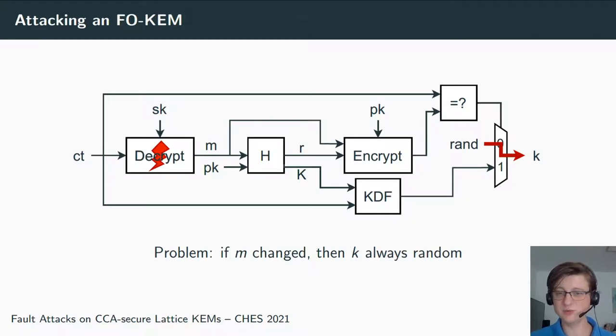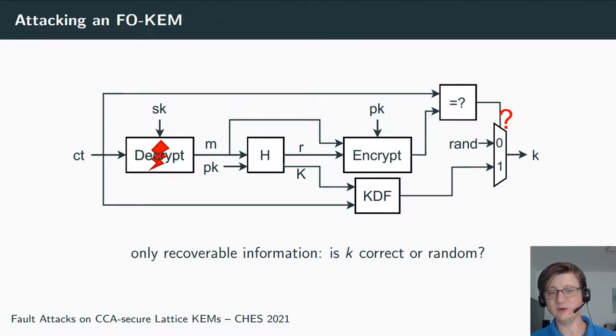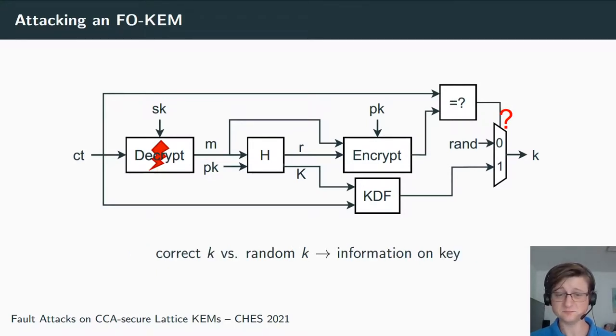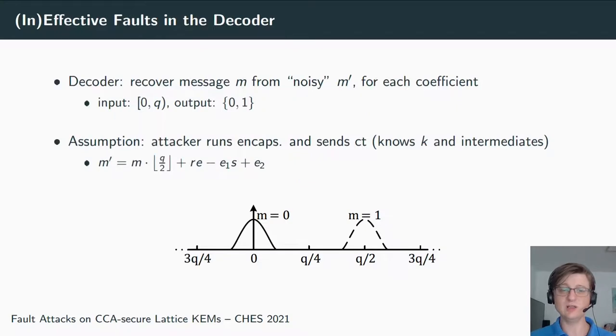Here, however, we have the problem: if we inject the fault such that this m, this message, is changed, then of course the re-encryption will lead to a different ciphertext, meaning that we will always return a random shared secret, and there's of course no information on the secret key somewhere in some random value. So we have to think of it a little bit differently, because if we think about it, the only recoverable information really that we get is: is the secret key correct? So did we follow this one path in this multiplexer—are both ciphertexts the same—or is it some random? Were the two ciphertexts different? This information, this distinction correct k versus a random k, has to carry some information on the key. Now, where can we inject the fault such that we have a chance to still get the correct key—still the same m—and that it also carries information on the key? Well, we found a place in the decoder.